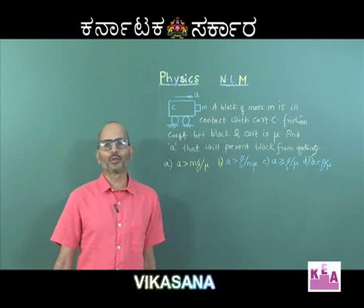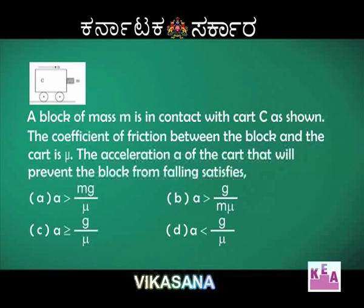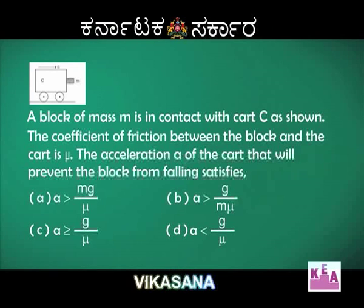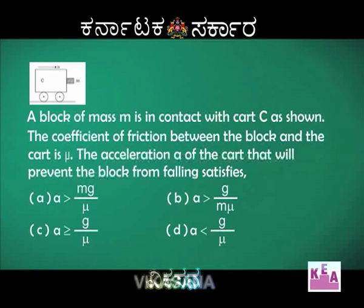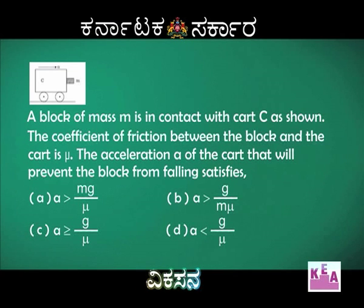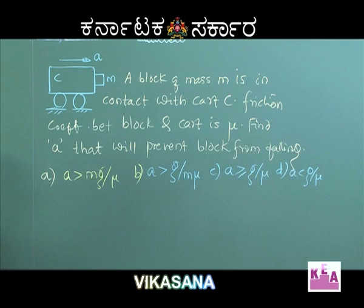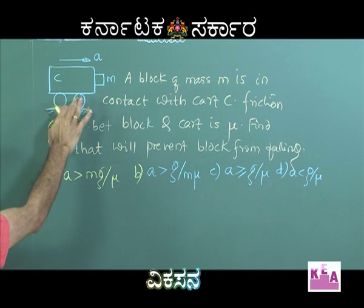Here is another problem on pseudo force. A block of mass M is in contact with the cart C. The friction coefficient between the block and the cart is mu. Find the acceleration A of the cart that will prevent the block from falling down. Let me draw the free body diagram of this block with respect to the cart — the cart is an accelerating frame of reference.